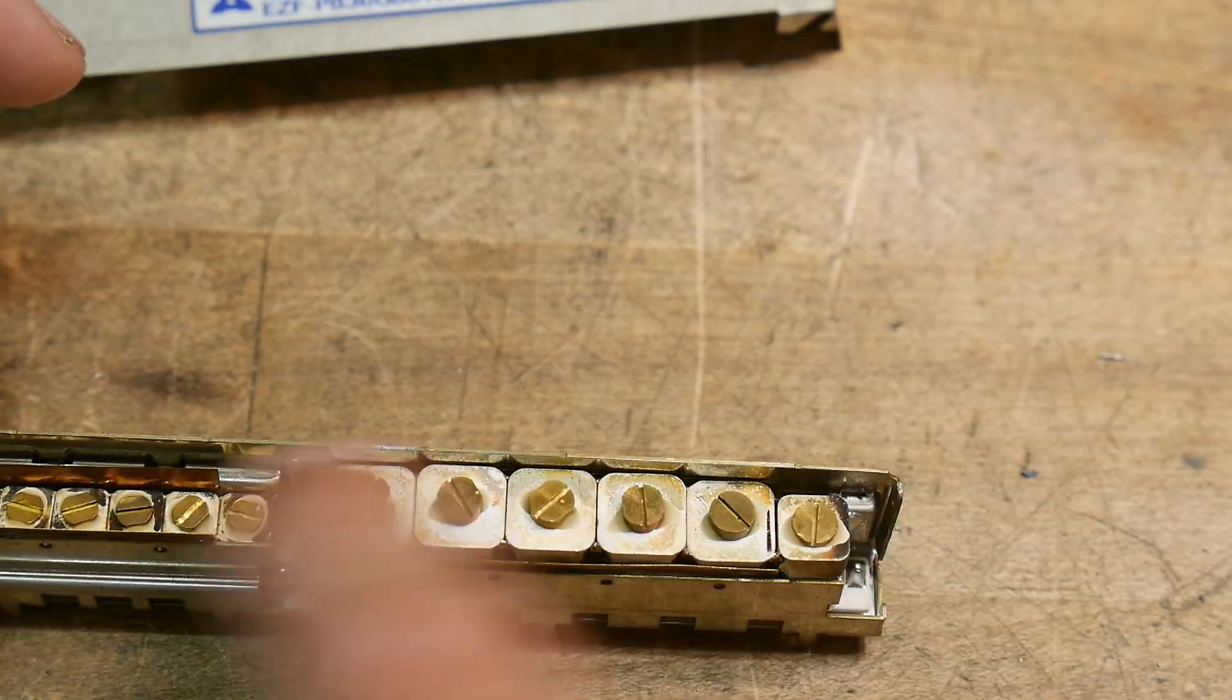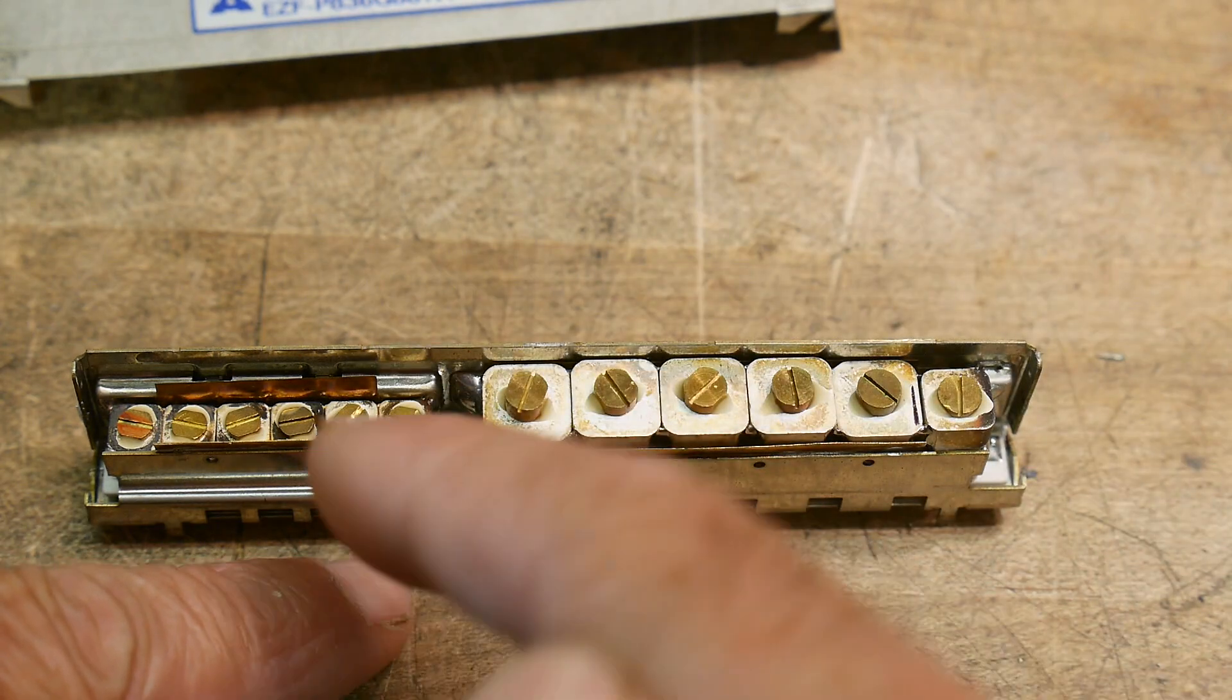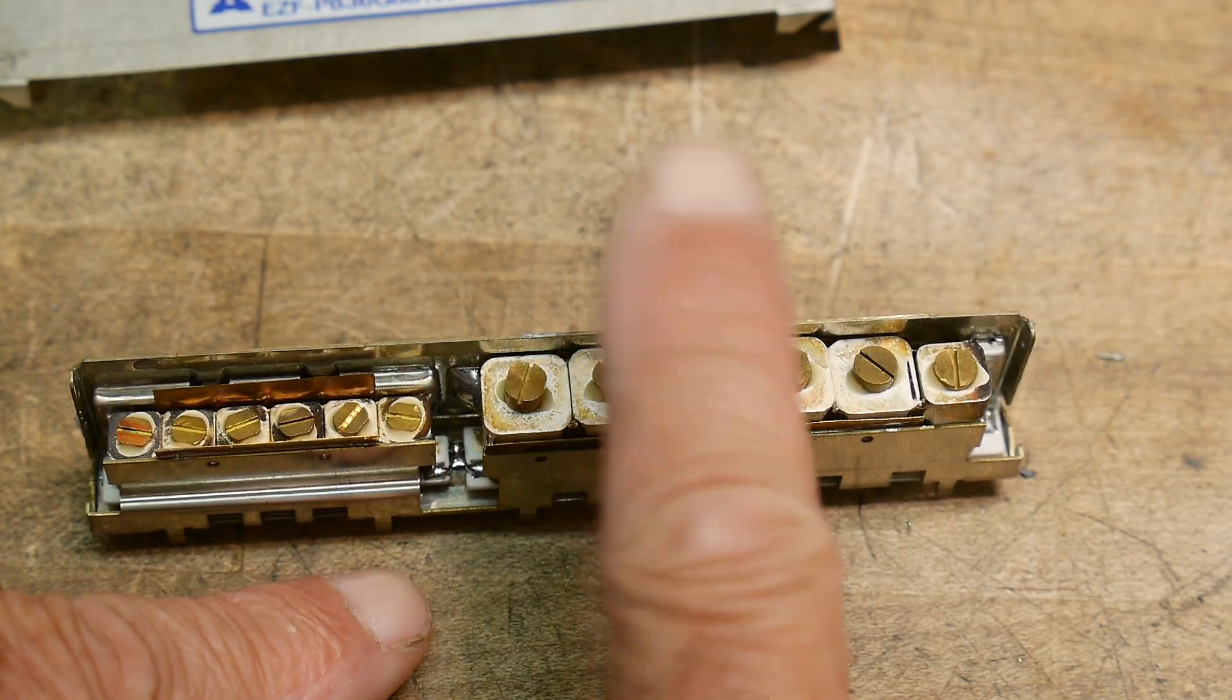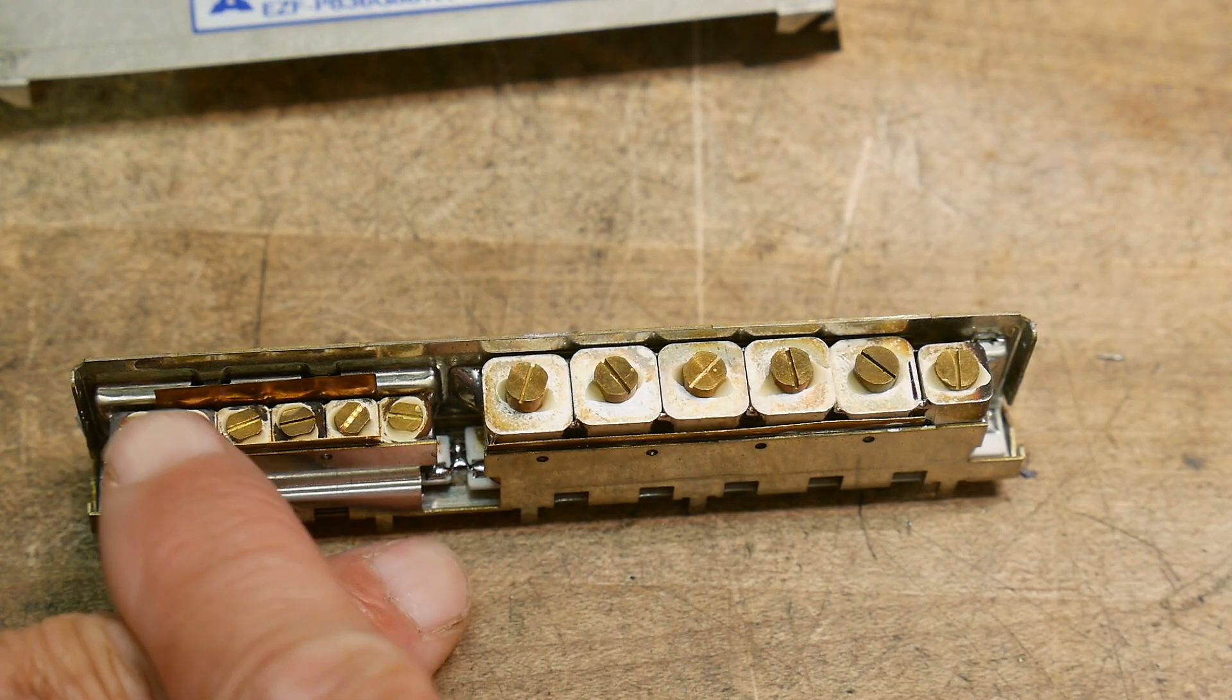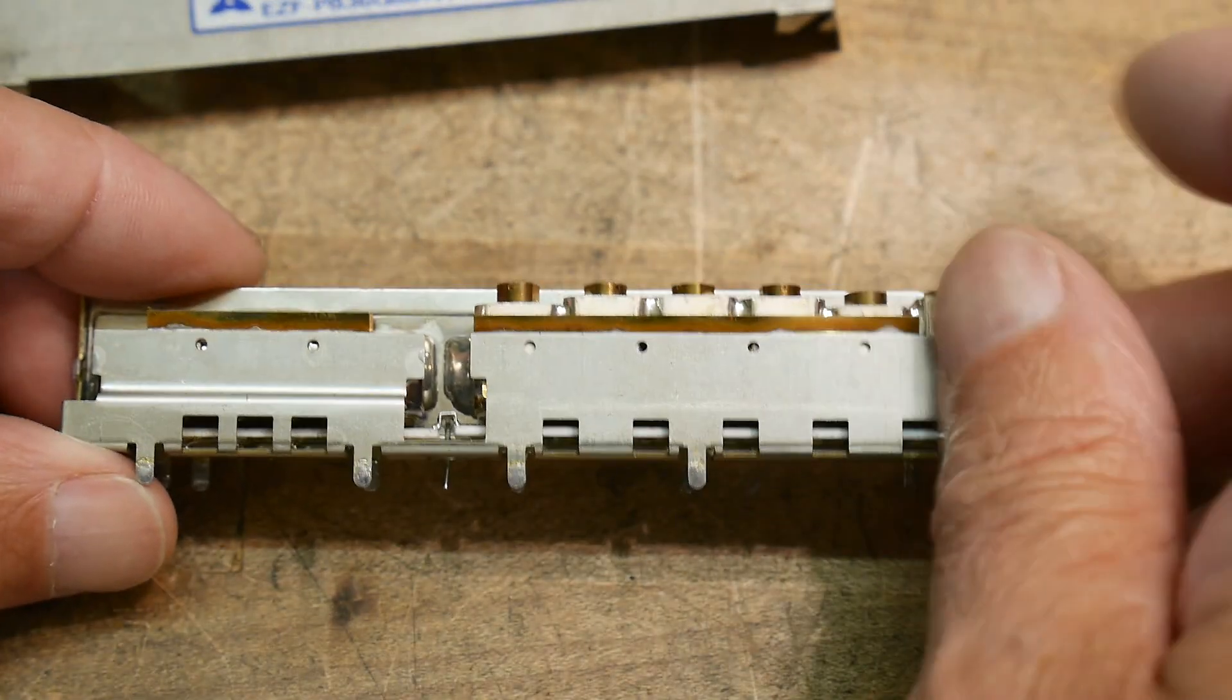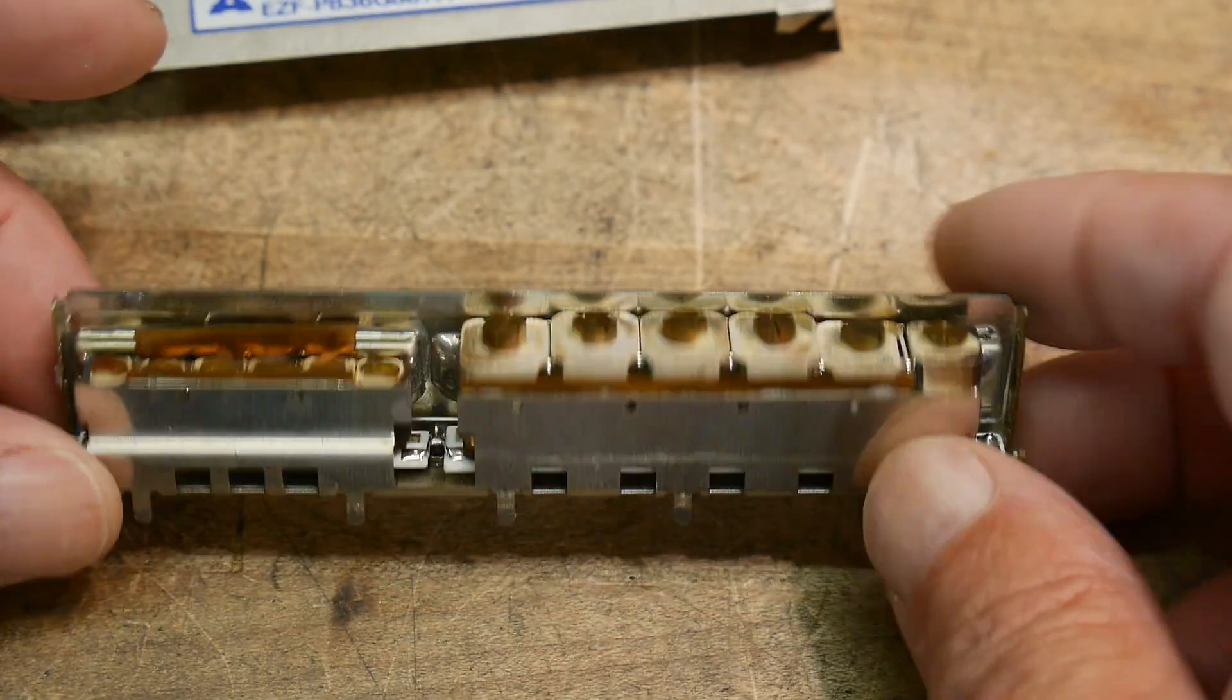So the way that a diplexer works is the transmitter goes through here and comes out but it's at a different frequency than this and so it won't go through there. This is a bandpass and this is a bandpass. This is tuned for just a singular frequency and this is tuned for a frequency. It lets this frequency through but gets blocked here. Then the receiver only hears what it wants to hear - it doesn't get swamped by the transmitter or the other way around.